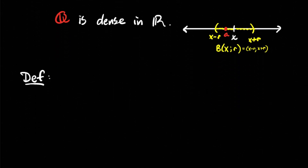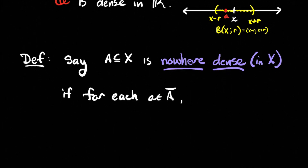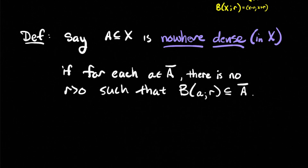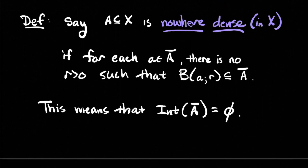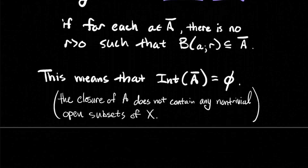A subset A of our metric space X is nowhere dense in X if for each element of the closure of A, there is no positive real number r such that the ball centered at A of radius r is completely contained inside the closure of A. That means the interior of the closure of A is empty — the closure of A does not contain any non-trivial open subsets of X. In particular, in a metric space, it contains no open balls.